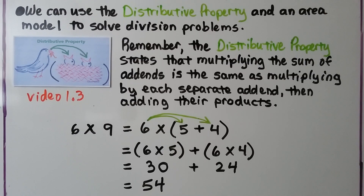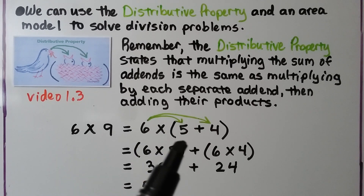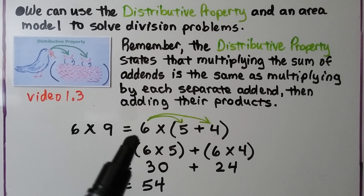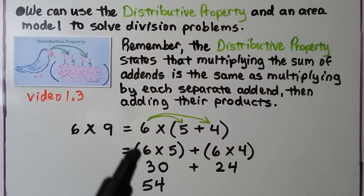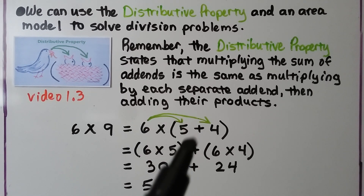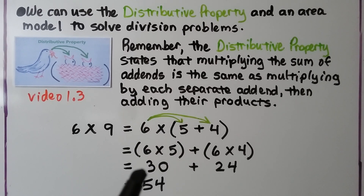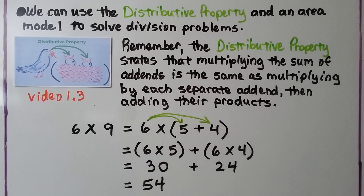We can use the distributive property and an area model to solve division problems. The distributive property states that multiplying the sum of addends is the same as multiplying by each separate addend and then adding their products. We have 6 times 9, which equals 6 times (5 plus 4). The 9 was broken into a 5 plus 4. We distribute the 6 into the parentheses — 6 times 5 plus 6 times 4. 6 times 5 is 30, 6 times 4 is 24. We add them together: 54.